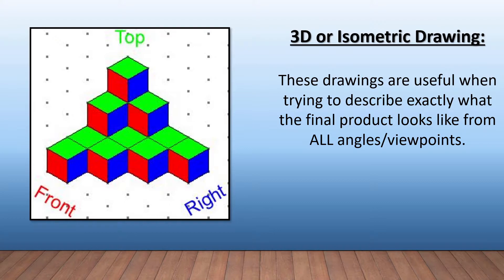Our 3D shapes, or what they would term isometric drawings, are useful when trying to describe exactly what the final product looks like from all angles and viewpoints. Sometimes you will see these 3D renderings of a particular object, especially when it comes to 3D printers — you would have a lot of these isometric drawings before actually printing so that you can see what it looks like from all different viewpoints.